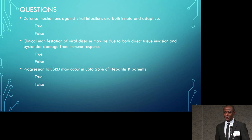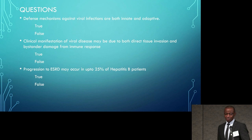I'm going to talk a little bit today about viral infections on the kidney. These are true-false questions we'll run through. The first question: defense mechanisms against viral infections are both innate and adaptive. The second: clinical manifestations of viral disease may be due to both direct tissue invasion and bystander damage from immune response. The third: progression to end-stage renal disease may occur in up to 25% of hepatitis B patients. All those answers are true, as we'll see through the course of this presentation.